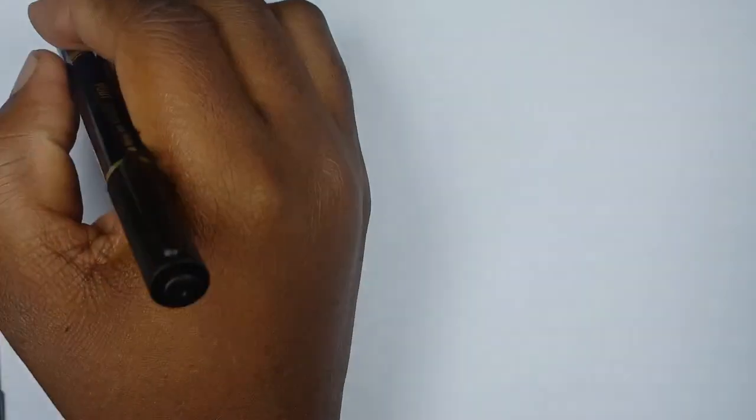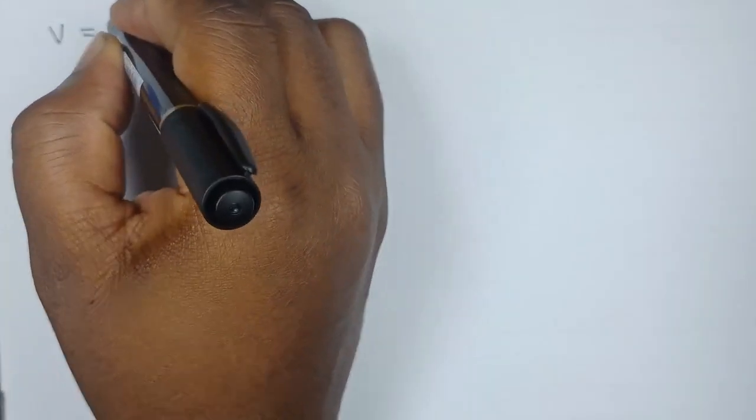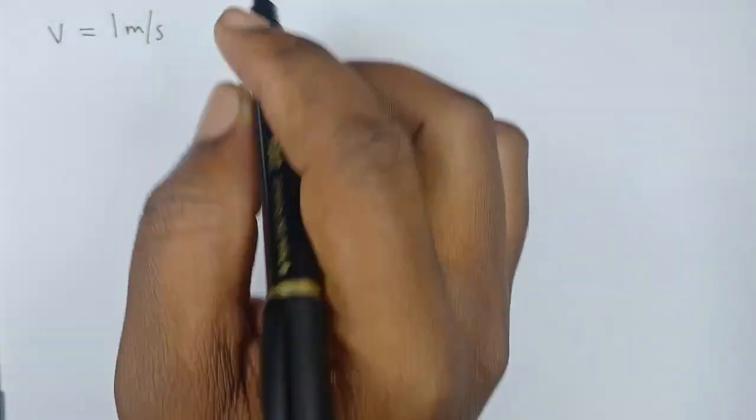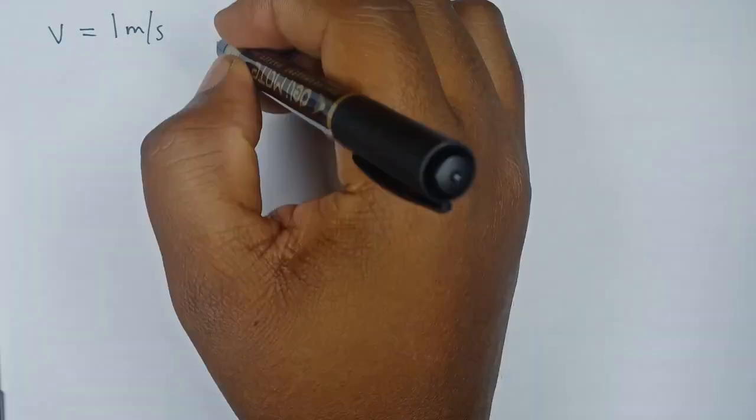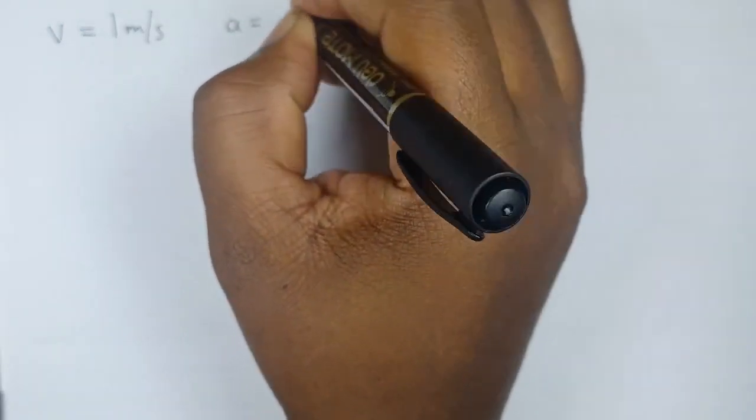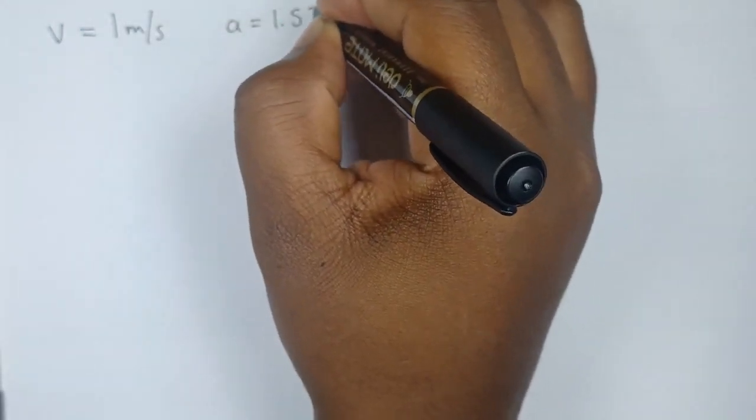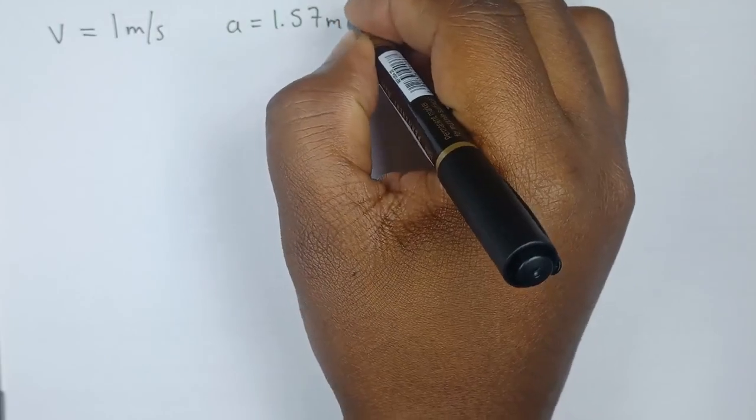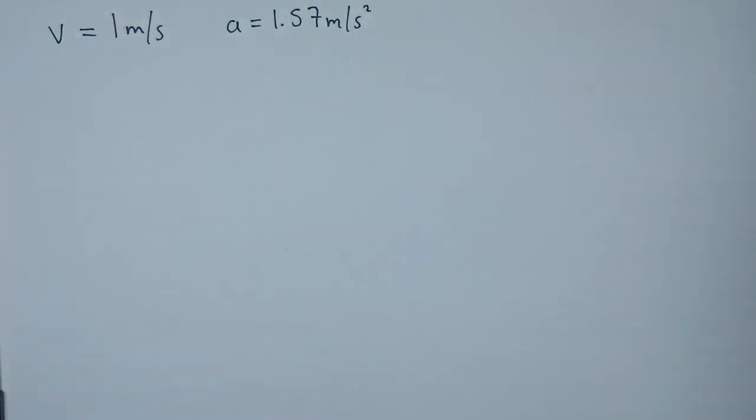So let's see what we've been given in the question. We have been given velocity, for which our velocity is 1 meter per second. Then we've also been given the value of acceleration, of which our acceleration is 1.57 meters per second squared.